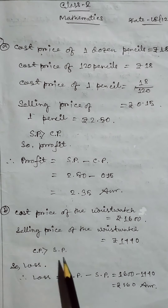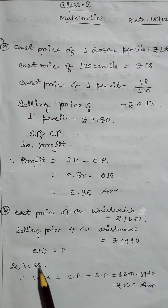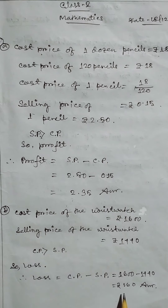Problem B: Cost price of the wristwatch is greater than selling price, so there is a loss. Loss equals rupees 160.